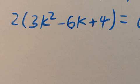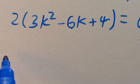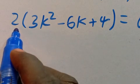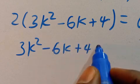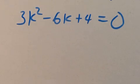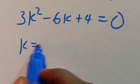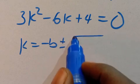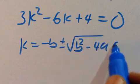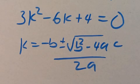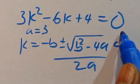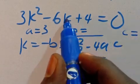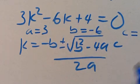By applying the quadratic formula to 3k squared minus 6k plus 4 equals zero, we have k equals minus b, positive or negative, square root of b squared minus 4ac, divided by 2a. The parameter a is the coefficient of k squared, which is 3. The parameter b is the coefficient of k, which is minus 6. The parameter c is the constant, which is 4.